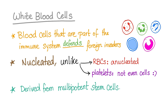If you are learning about any topic for the first time, the first question is: what's the definition? White blood cells are blood cells that are part of the immune system that defends your body against foreign invaders. They are nucleated, unlike red blood cells which are anucleated, and unlike platelets which are not even cells — platelets are just fragments of the cytoplasm of their parent cell called the megakaryocyte.